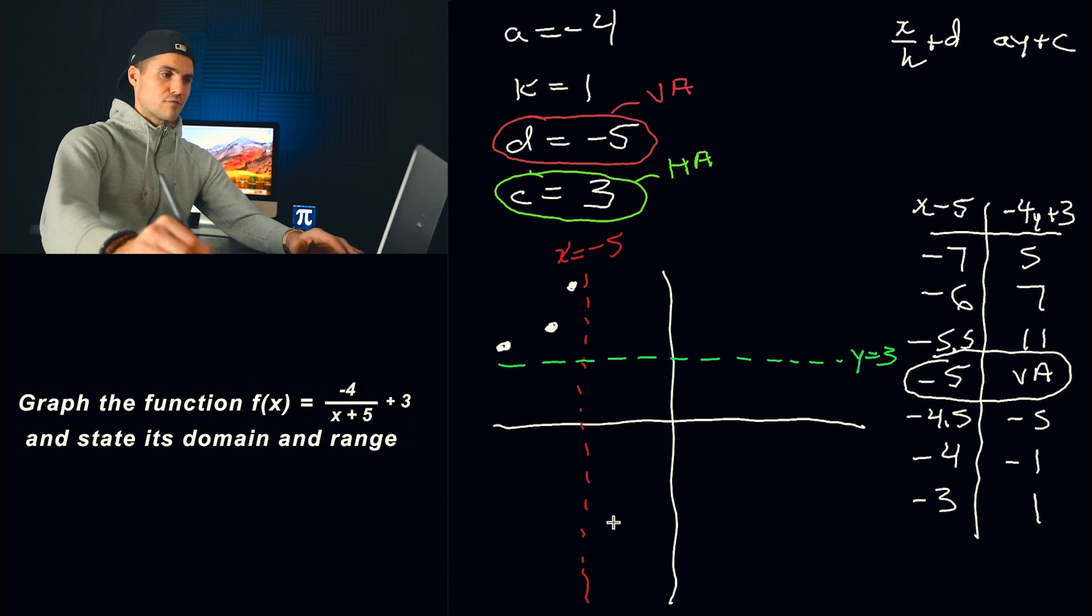So negative 4.5, negative 5. That's like down here. And then we got negative 4 and negative 1. That's going to be, let's say, like right here. And then we got negative 3 and positive 1. You know what? I'm going to put this point a little bit higher. And like that. And I got negative 3 and positive 1. Looks something like that.